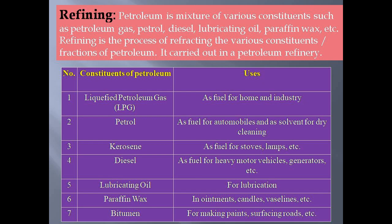Diesel is used as a fuel for heavy motor vehicles and generators. Lubricating oil is used for lubrication. Paraffin wax is used in ointments, Vaseline, and candles. Bitumen is used for making paints and for surfacing roads.